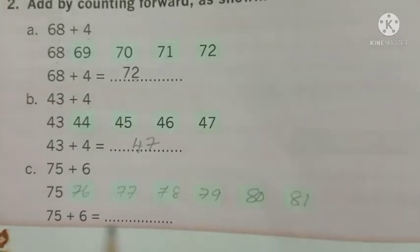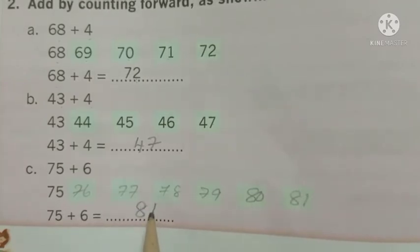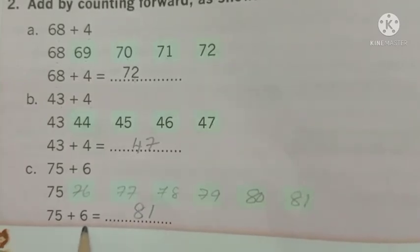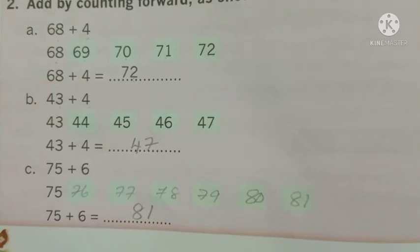We wrote 6 more numbers. 1, 2, 3, 4, 5, 6 more numbers. Now we reached at 81. Therefore the answer is 81. 75 plus 6 is equal to 81.